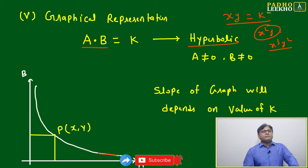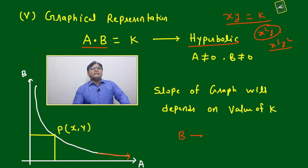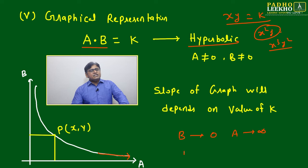Like here, if this graph is going toward where B equals zero, then A is becoming infinity. If B approaches 0, A approaches infinity. And just the opposite: if A approaches 0, B approaches infinity. Correct?